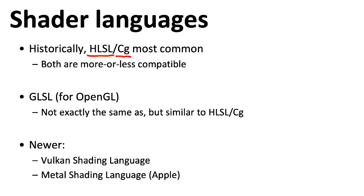CG stood for C for Graphics. OpenGL had its own shading language called GLSL. If you find code written in GLSL, it's fairly easy to adapt it to HLSL and vice versa. Vulkan is a new API that's the successor to OpenGL, and essentially what Vulkan does is it takes a lot of decisions that were implicitly handled by the OpenGL driver and puts them in the hands of the programmer so the programmer can do some more detailed optimizations.